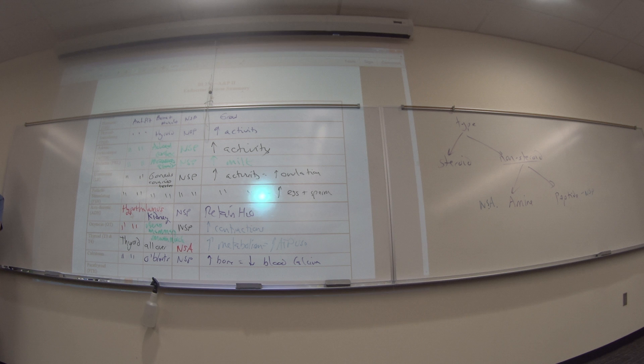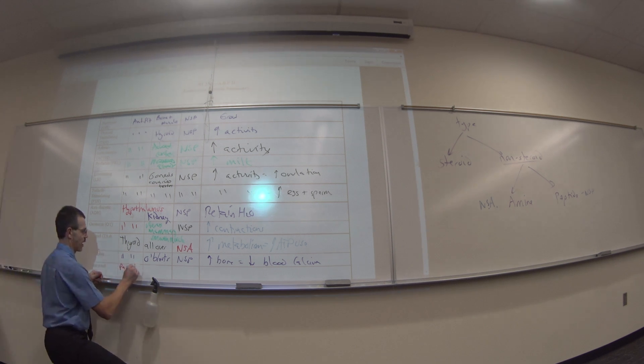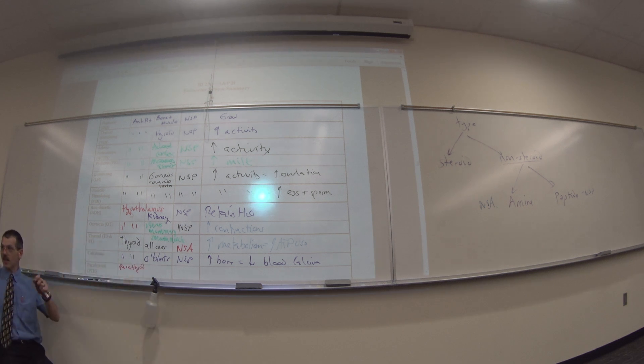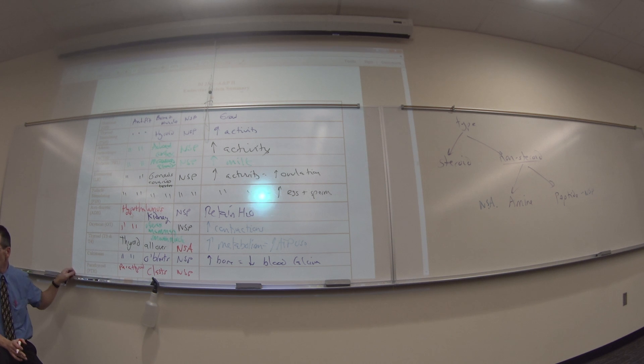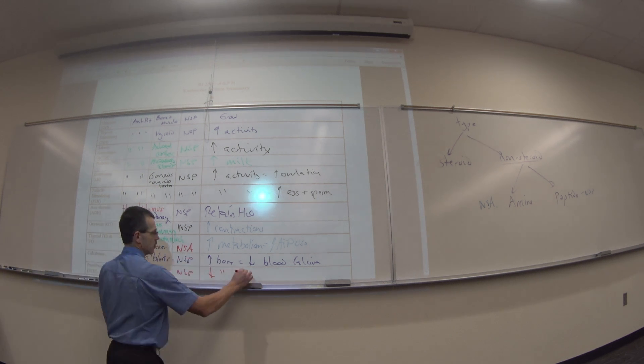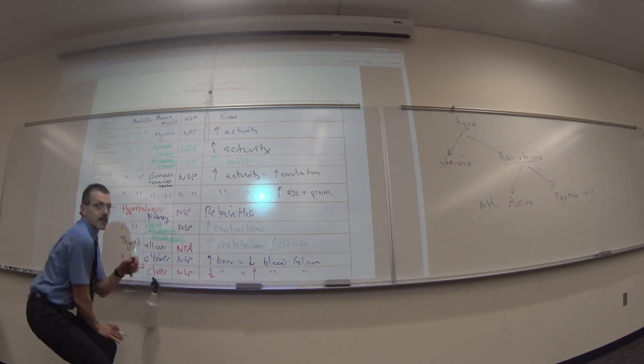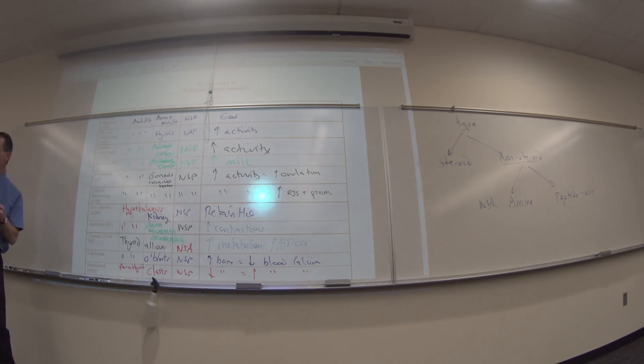PTH. Where was it made? The parathyroid. The target is osteoclasts. It's an NSP. And what do clasts do? Break down bone to increase your blood calcium. We take it out of the bone to put it into the blood. Make sense on these answers? Questions so far?